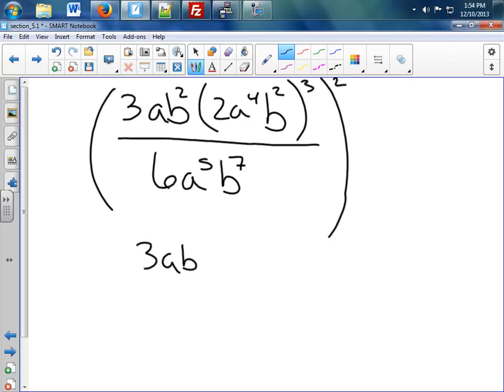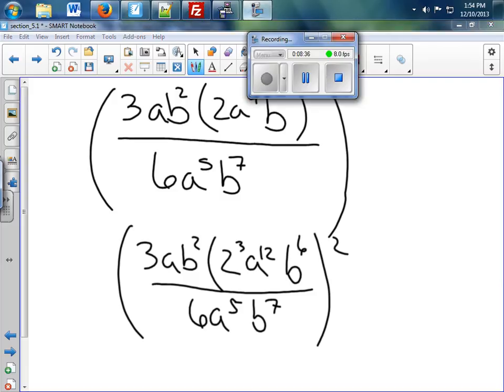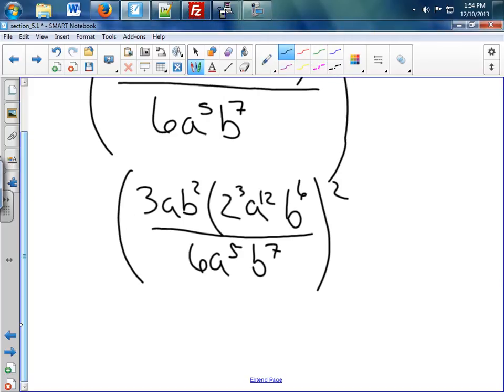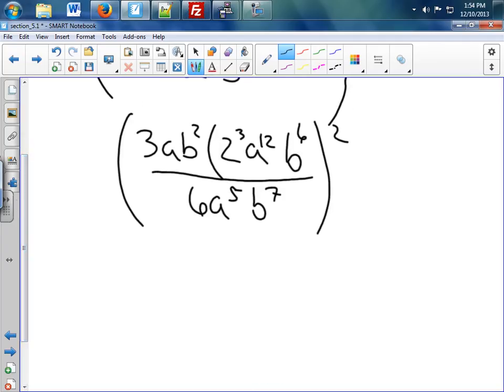So I'm just going to do 3, A, B squared, 2 to the 3rd, A to the 12th, B to the 6th, squared, over 6, A to the 5th, B to the 7th. That's all I'm going to do.